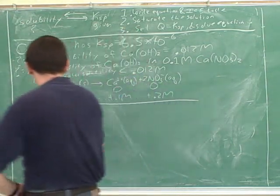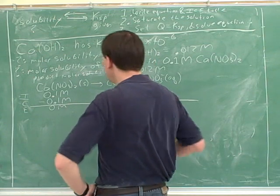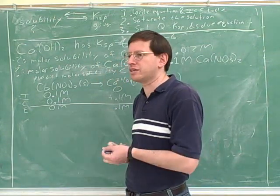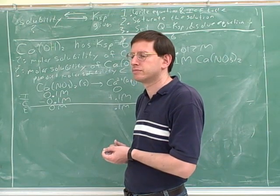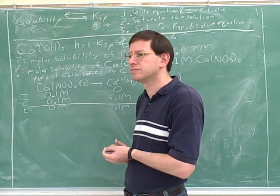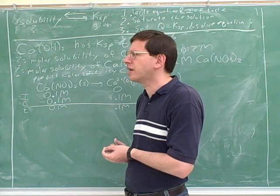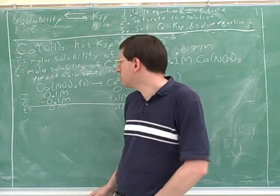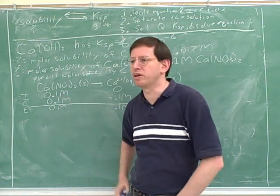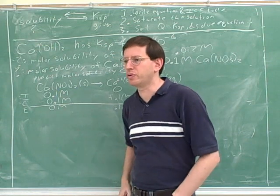This is going to be twice this because of the coefficients. Now, how did you know that we were going to use up all the calcium nitrate? Because we cannot go over Ksp — we cannot dissolve more than the solution can take. But how did you know we were going to use up all of the calcium nitrate, and not less than the 0.1 molar? How do you know this change will be 0.1 molar rather than less than 0.1 molar?